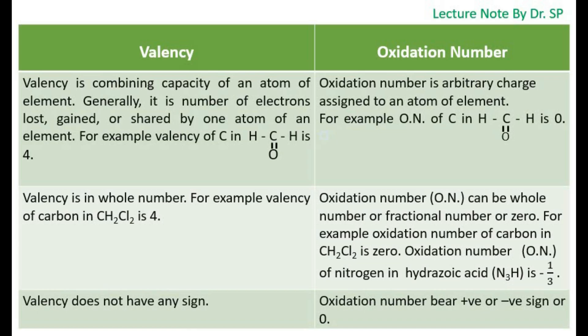For example, oxidation number of carbon in dichloromethane, CH2Cl2, is 0. And oxidation number of nitrogen in hydrozoic acid, N3H, is minus 1 by 3.